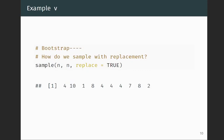Now let's try Bootstrap. We sample with replacement using the function sample with replace equals TRUE. In the example code, we're sampling from the integers 1 to n — remember n is 10 — sampling n times with replacement. You can see that some values get repeated: for example, the number four appears four times, and as a result some observations don't appear at all. That's how sampling with replacement works.